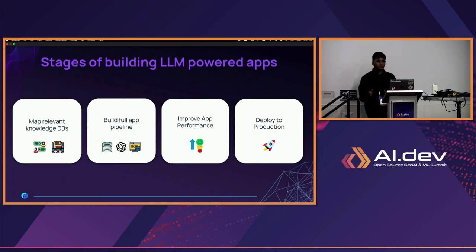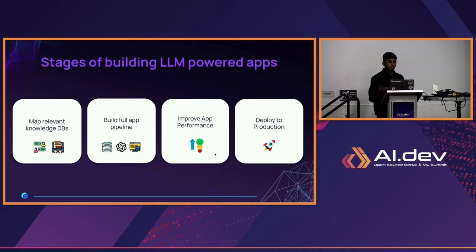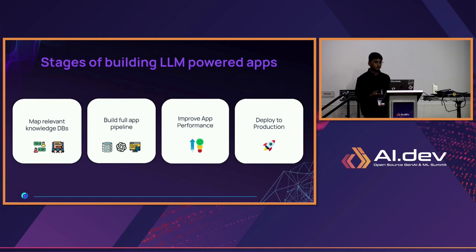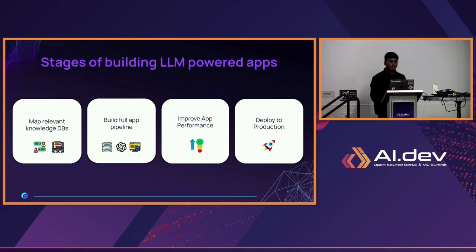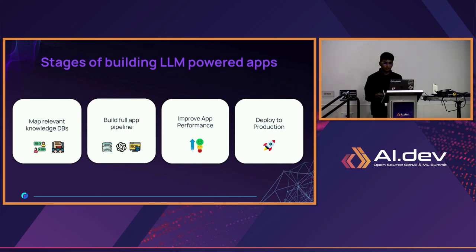We'll start from a zero-to-one sort of thing — the stages of building LLM-powered applications. It starts with mapping relevant knowledge databases, then you build your app's architecture and the complete pipeline. Before releasing it, you improve the performance of your LLM application and fine-tune it so that it's ready for release. Then you deploy it to production.